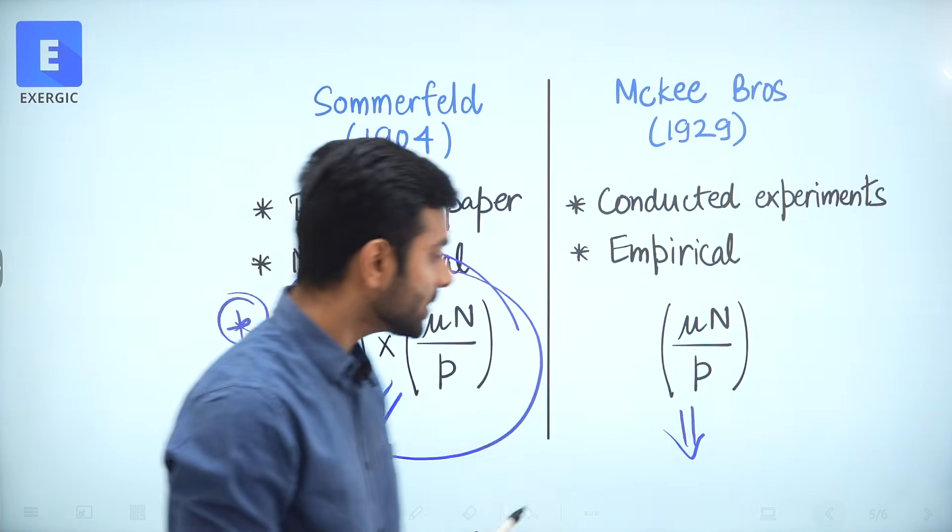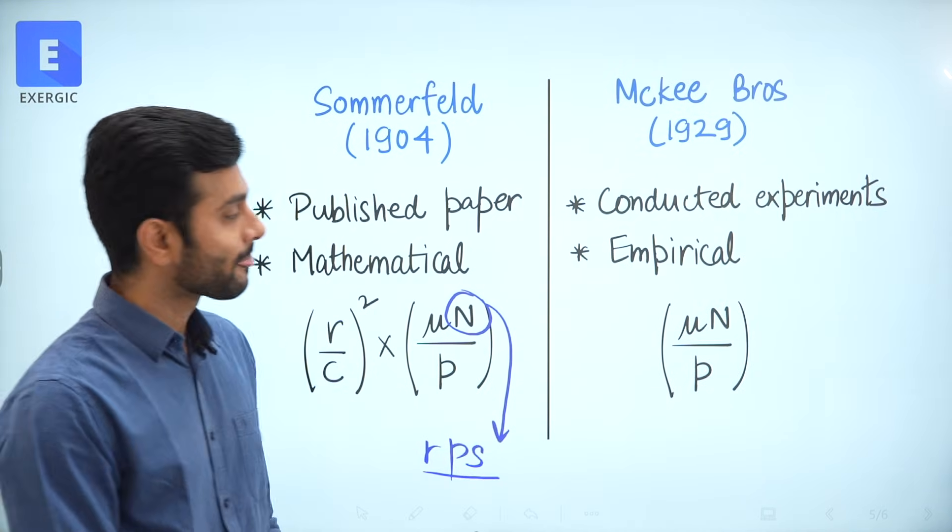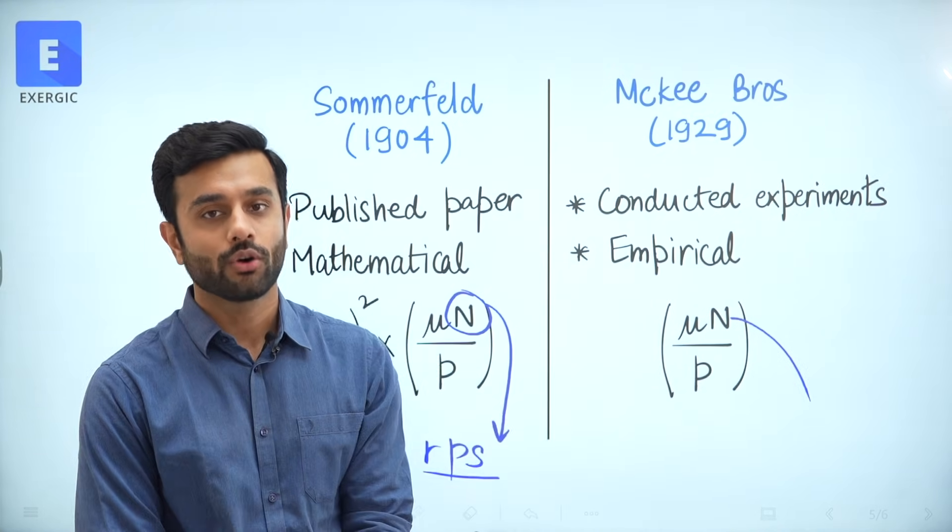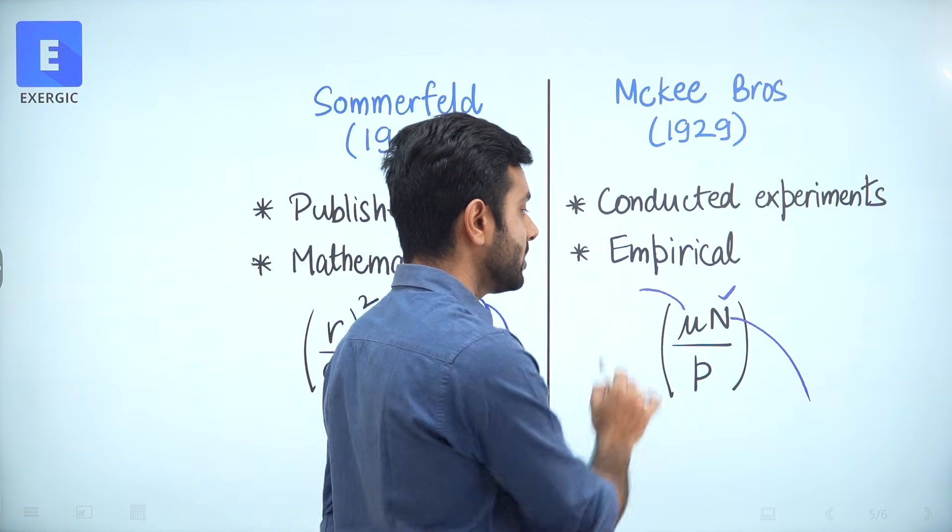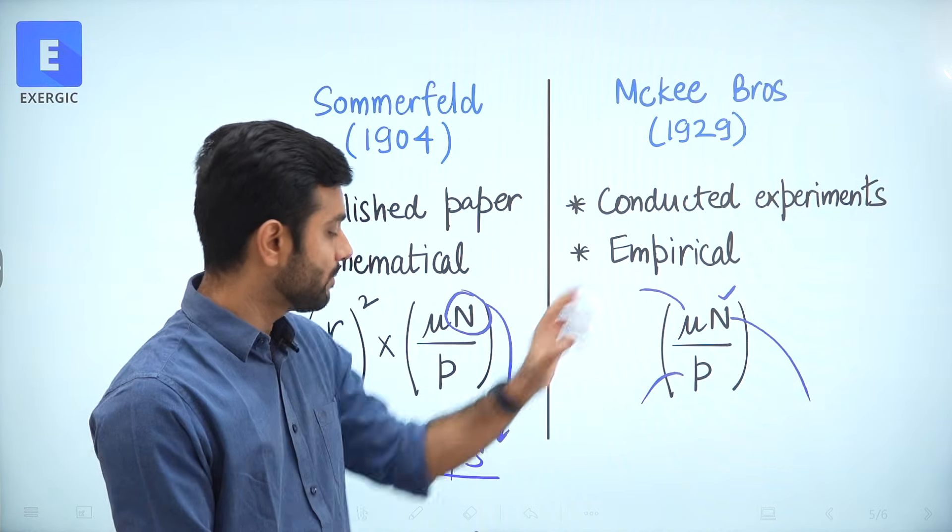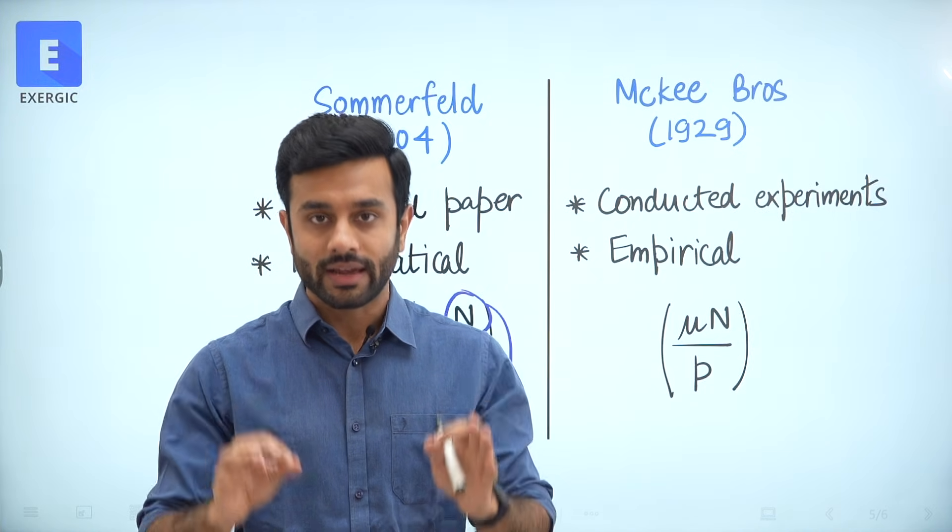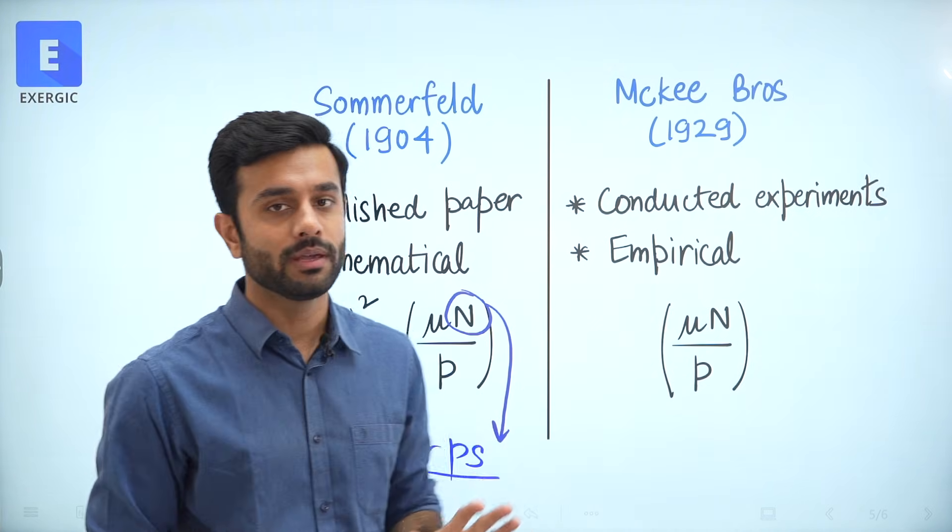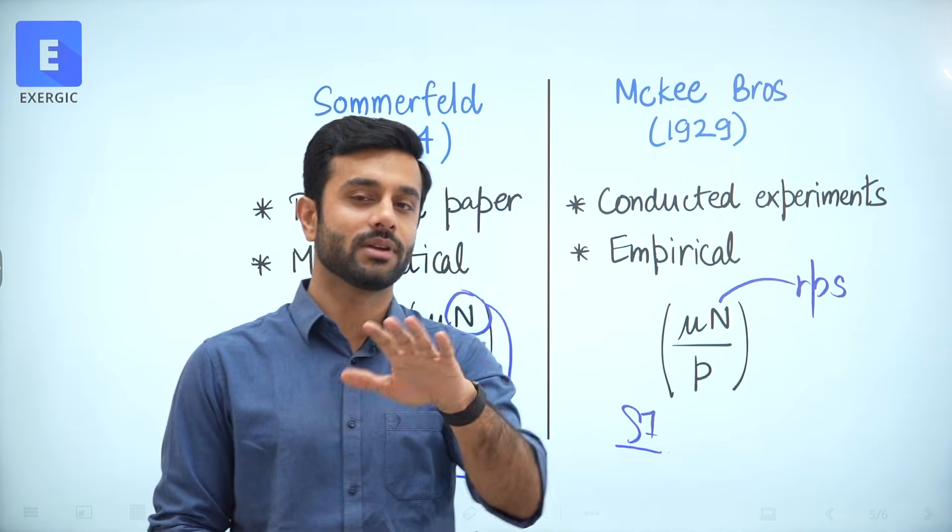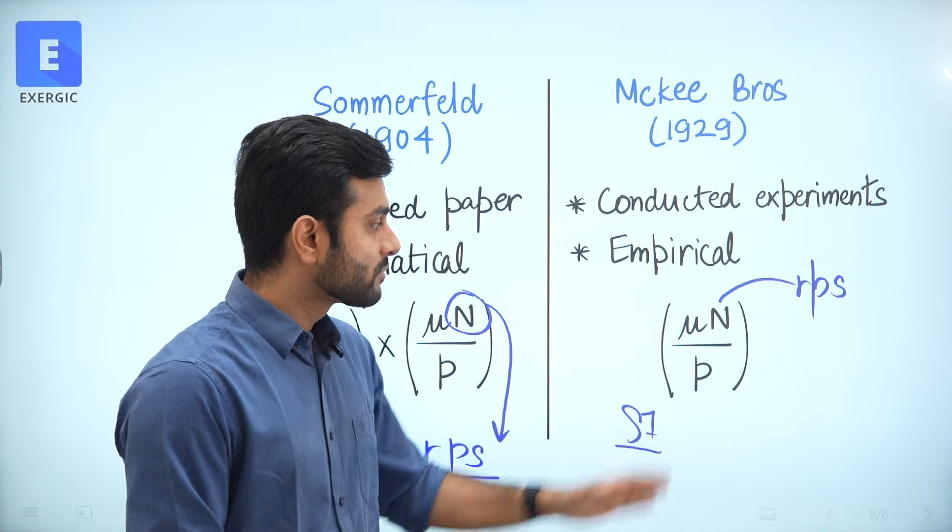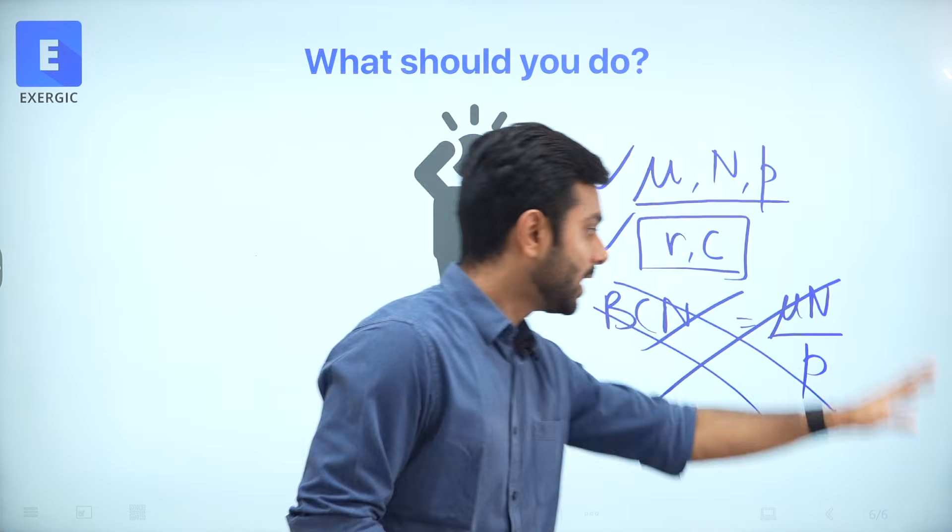You observe the question given to you. If the question only has mu, n, and p, then there is no point. You use these three. If mu, n, and p, these three only are given and question is asking you bearing characteristic number, so anyway, you would have done mu n by p only. But suppose question came where in addition to mu n by p, they have also given the radius and clearance. What will you do then? I will recommend you that then you don't use this formula. And then you use the value, the formula of Sommerfeld number only. If IITs are making a question to find BCN and they are giving you value of r and c, so most probably, most likely they are using this formula for their answer. It would be a better idea to use this only.